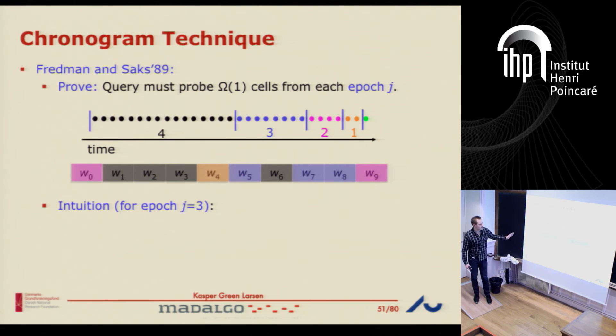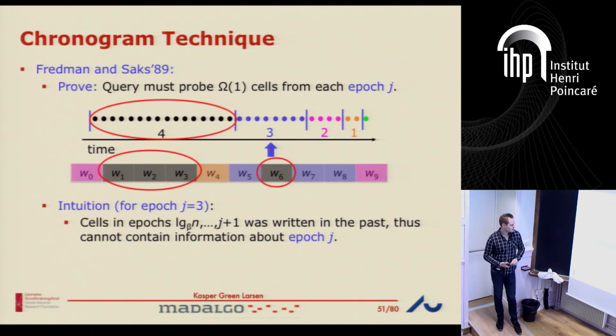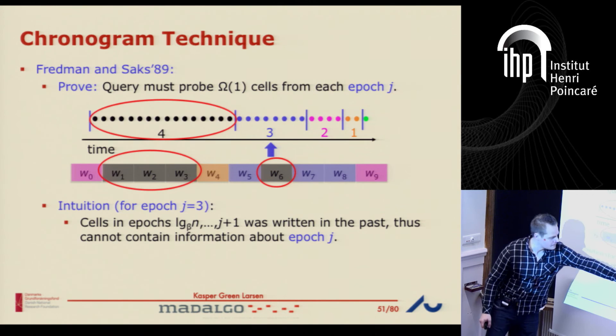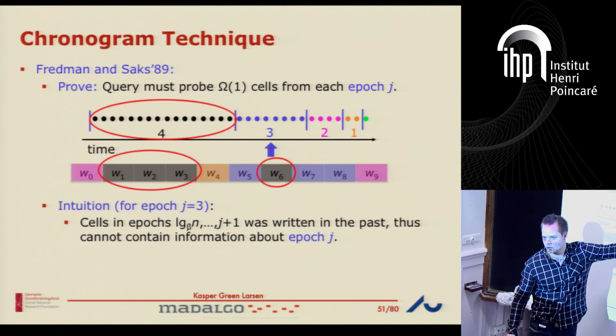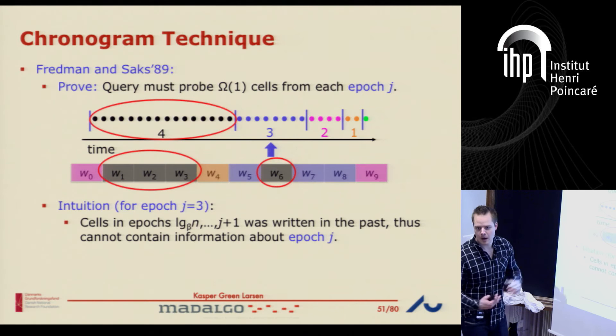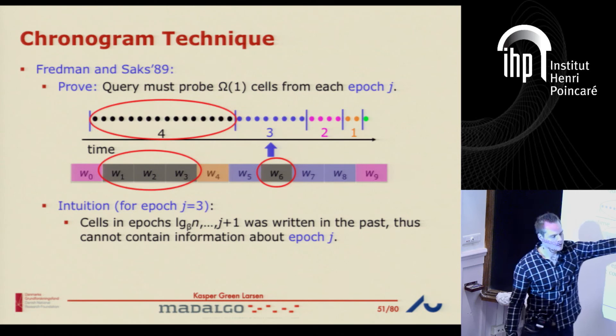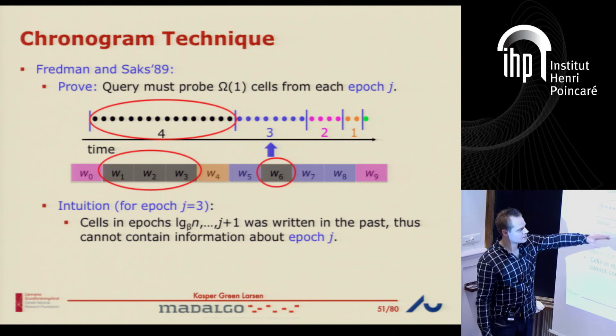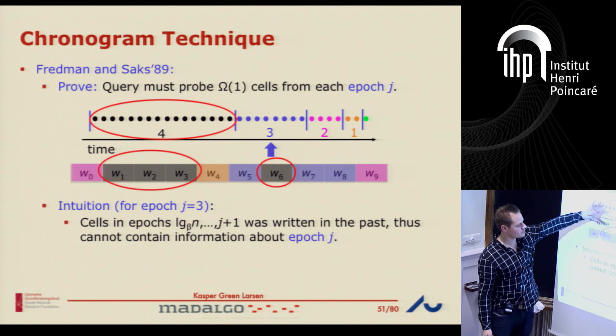Let's get some intuition about why you'd have to read something of every color for this prefix sum problem. Everything that happens in the larger epochs happened in the past. All of this was executed before seeing these later updates. If the updates are independent of each other, anything written back there cannot say anything about what's going on in a later epoch — when you wrote that stuff to memory, you didn't know what epoch 3 was doing. Everything written in the past doesn't help you.